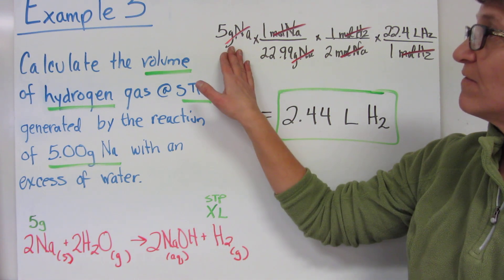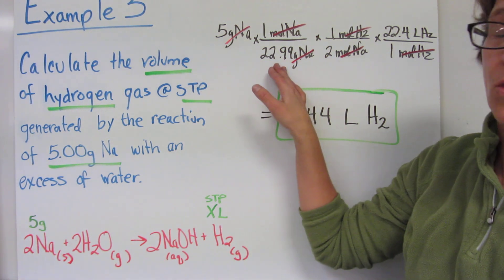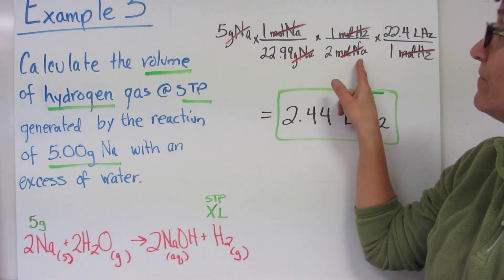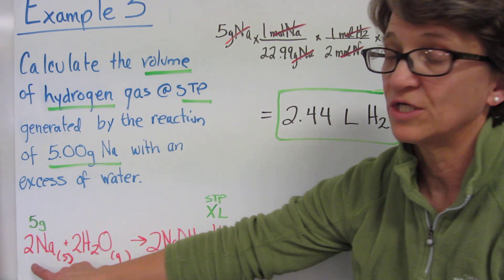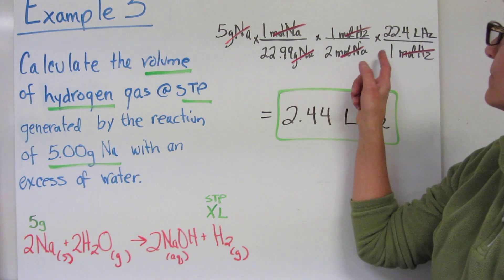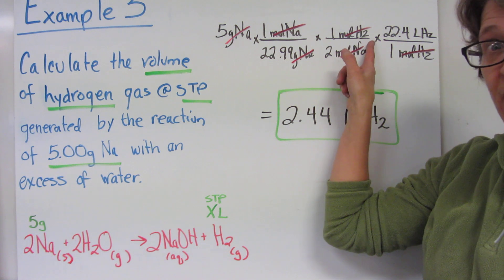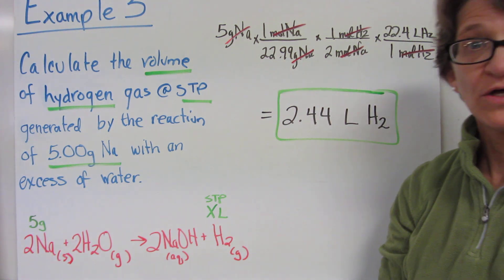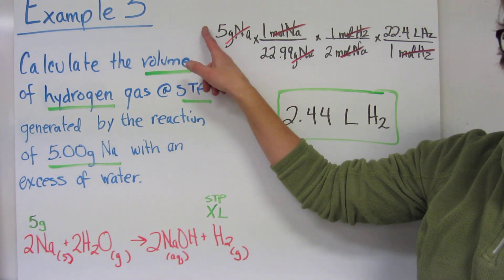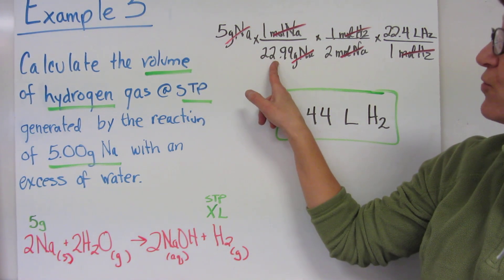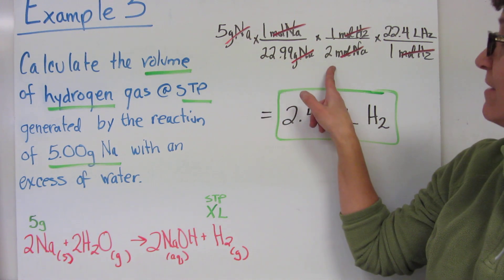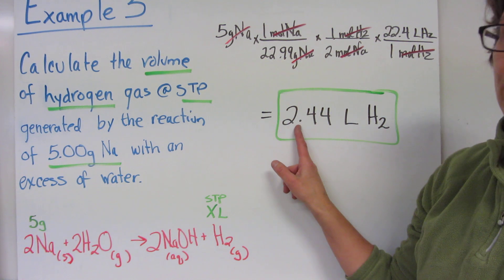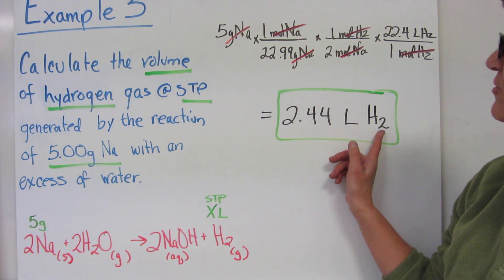This time, convert your sodium to moles by using the molar mass from the periodic table. Convert your moles of sodium to moles of hydrogen using the balanced equation ratio. Convert your moles of hydrogen to liters of hydrogen by using the molar volume ratio. Mathematically, you have 5 grams divided by 22.99 divided by 2 times 22.4. When you round to three sig figs, you have 2.44 liters of hydrogen.